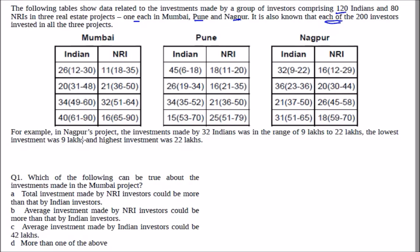For example, in Nagpur's project, the investment made by 32 Indians was in the range of 9 to 22 — lowest was 9, highest was 22. There are 120 Indians total, so the Indian rows add up to 120.